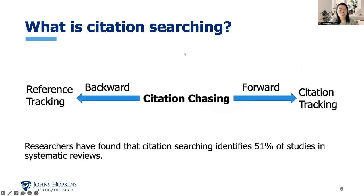Another supplementary search technique is called citation searching. There are two directions in citation tracing. There is backward citation tracing, which is also called reference tracking. There is also forward citation tracing, which is also called citation tracking. Citation tracing is important — researchers have found that citation searching identifies 51% of studies in systematic reviews.